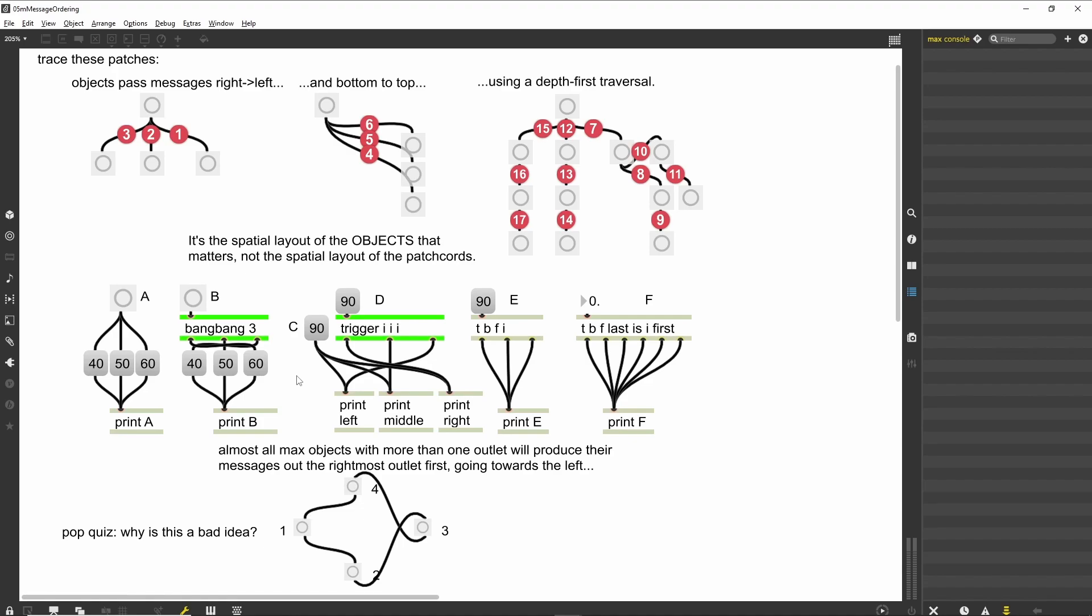Another object that provides explicit ordering is the trigger object. The trigger object accepts any input, and outputs messages based on its arguments. The arguments determine the number of outputs and set their type, with options of L for list, B for bang, I for integer, F for floating point number, and S for symbol. You can also use specific integers, floating point numbers or symbols as constant outputs.